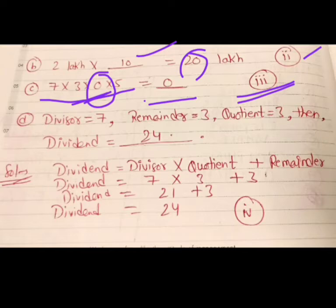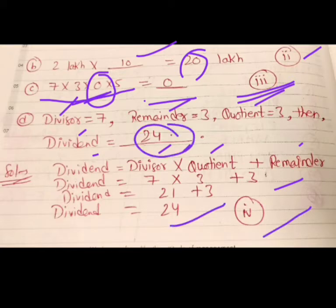Now in D part, hume divisor diya hai, remainder diya hai, quotient diya hai, hume dividend find karna hai. So humne padha tha ki relationship, dividend is equal to divisor multiply quotient plus remainder. So dividend is equal to divisor 7, quotient 3, and remainder is also 3. So 7, 3 is 21, plus 3, 24. That is option number 4.